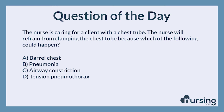The nursing category is respiratory. The NCLEX category is basic care and comfort. The nurse is caring for a client with a chest tube. The nurse will refrain from clamping the chest tube because which of the following could happen?